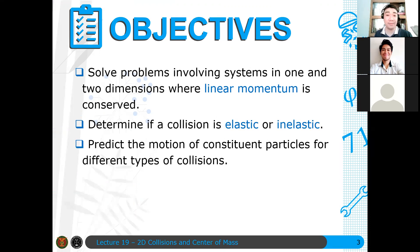We predict the motion of constituent particles for different types of collisions. We determine the final velocities of the two particles colliding given some initial values, for example, initial velocity and the angles for 2D. Finally, we locate the center of mass of the system.